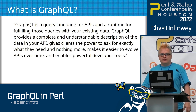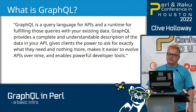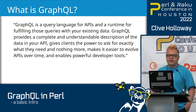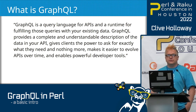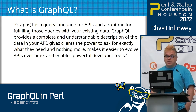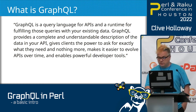I grabbed the definition from the website. GraphQL is a query language for APIs and a runtime for fulfilling those queries with your existing data. GraphQL provides a complete and understandable description of the data in your API. It gives clients the power to ask for exactly what they need and nothing more, and makes it easier to evolve APIs over time and enables powerful developer tools — although I have no idea what they mean by that at the moment.